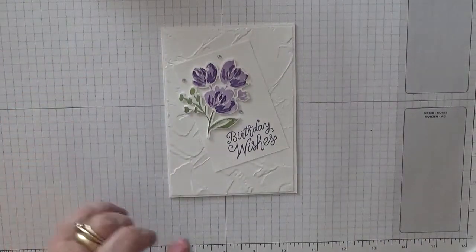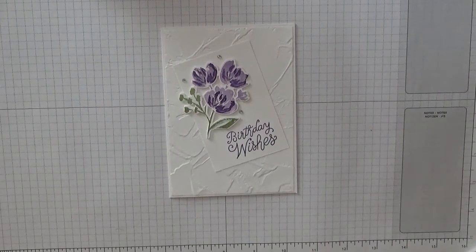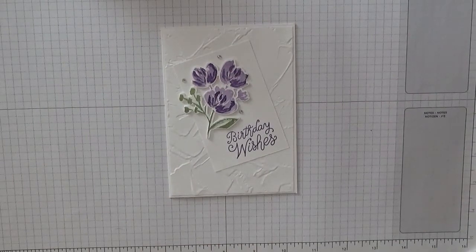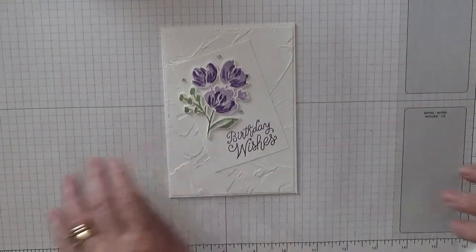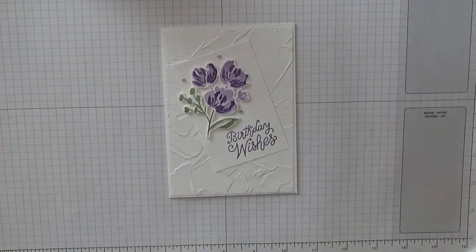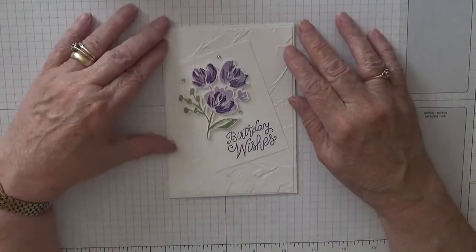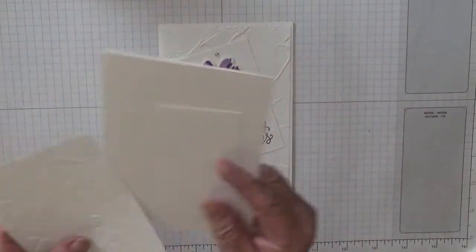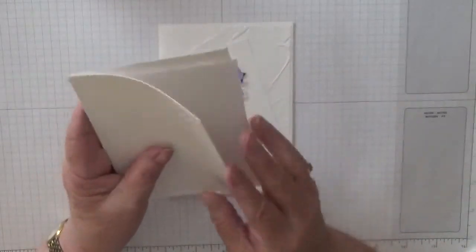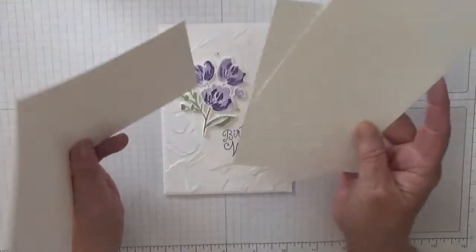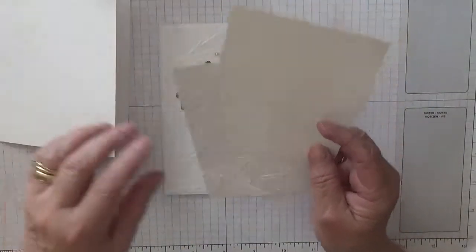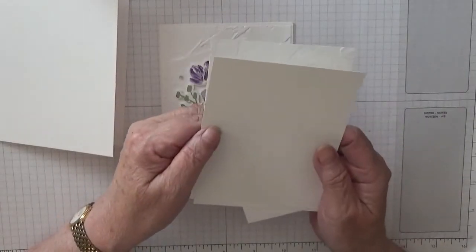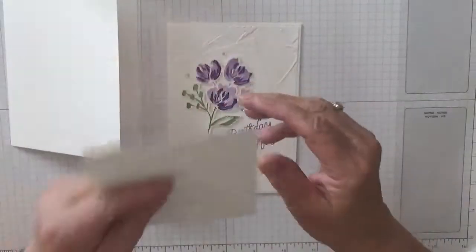I've just remembered I forgot my die-cutting machine, didn't bring it to the table. Anyway, to make this card I've got a card base of eight and a quarter by five and seven eighths, scored at four and one eighth. A piece of two pieces of white card at five and five eighths by three and seven eighths, one for the inside and one for the top.